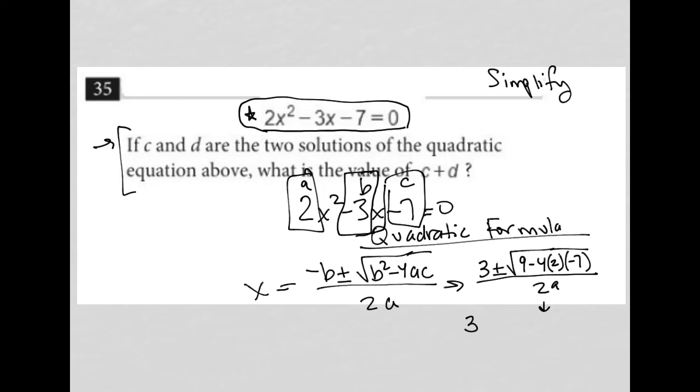Let's continue on. I have 3 plus minus square root 9. Negative 4 times 2 is negative 8, times negative 7 is positive 56. So plus 56 all over 2A. Oh that's right, A was 2. So all over 4.